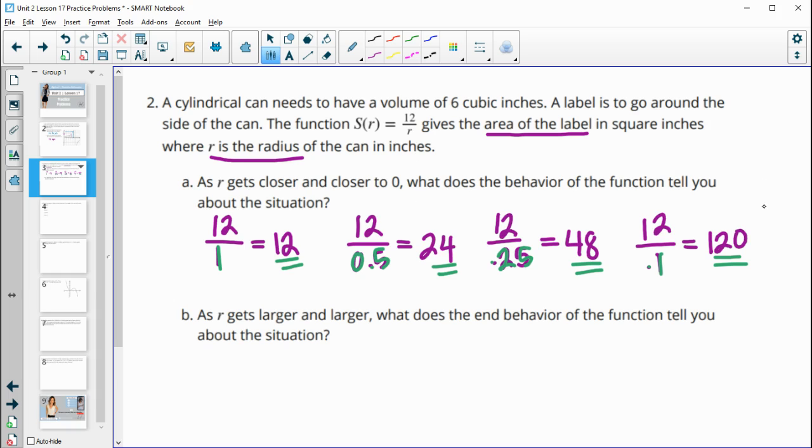So this kind of means like the skinnier the can. So if you've got this versus this, and they have to keep the same volume. So the smaller the radius, the larger the surface area. So this surface area of this label is getting bigger.